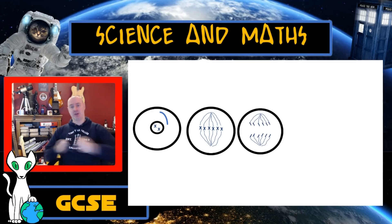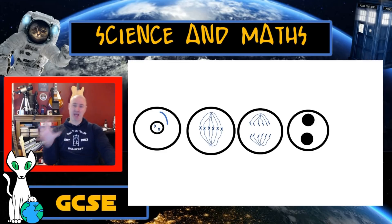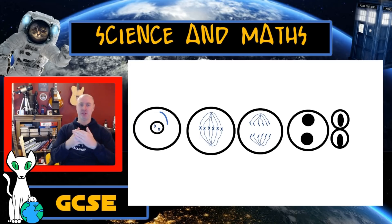In anaphase, they are pulled apart, 46 to the top, 46 to the bottom. In telophase, they are packaged in new nuclei. And then in cytokinesis, the cell membrane pinches apart and we have two new cells.